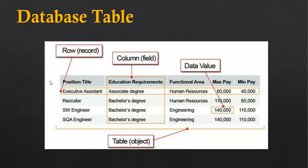Here is an example of a database table with four entries. A complete row — for example, Executive Assistant, Associate Degree, Human Resource, 60,000 — is known as a record in Salesforce. An individual column like Education Requirement is treated as a field. In this table we can see five fields: Position Title, Education Requirements, Functional Area, Max Pay, and Min Pay. An individual data value would be something like 1,40,000, and the complete table is known as an object in Salesforce.